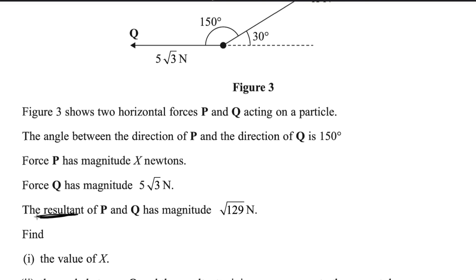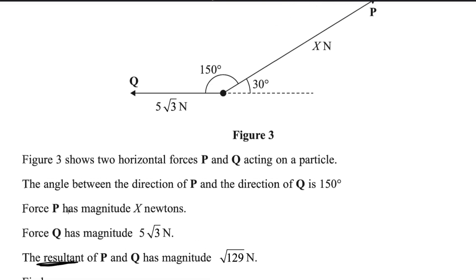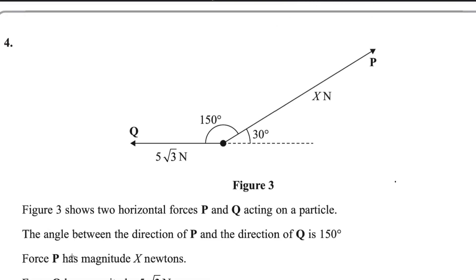The resultant of two or more vectors could be found by using head to tail rule. Let me tell you what is the head to tail rule. We join the tail of one vector with the head of the other vector by making the same angle 30 degrees with the horizontal. So P will be here and resultant you could find by joining the tail of Q with the head of P.